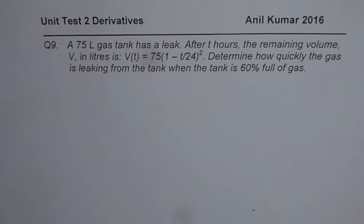A 75 liter gas tank has a leak. After T hours, the remaining volume V in liters is V of T equals 75 times 1 minus T over 24 whole square. Determine how quickly the gas is leaking from the tank when the tank is 60% full of gas.